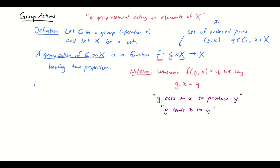Property one: for every x belonging to the set X, the identity of G acts on x to produce x. In other words, the identity sends each element of X to itself. That makes intuitive sense because we think of the identity as not doing anything, so it also doesn't do anything to elements of X. It's part of our definition and it seems like a sensible thing to define.